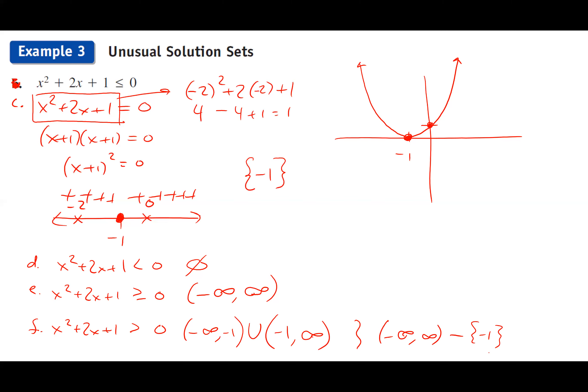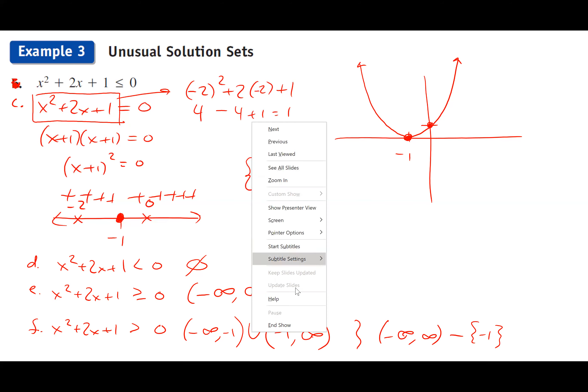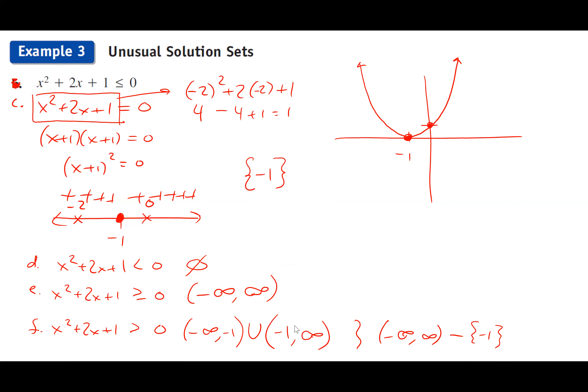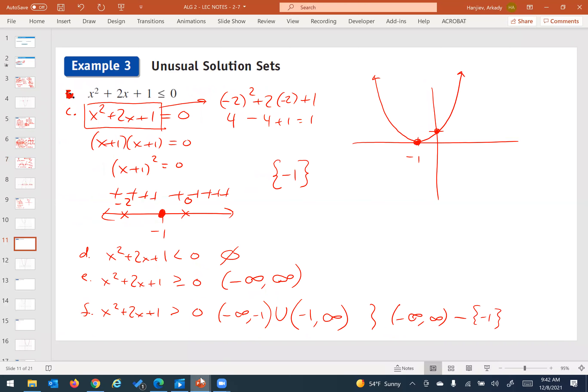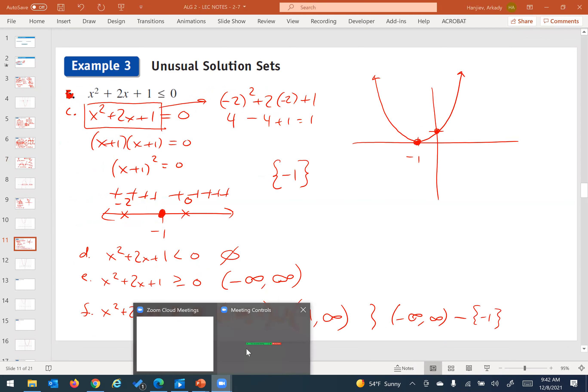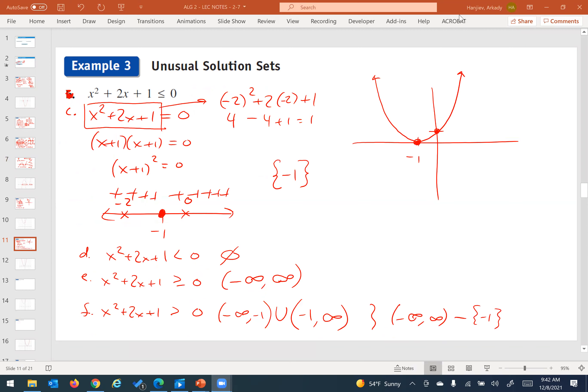We did not finish 2.7 today — we still have the rational inequalities to cover. We'll finish up on Friday. Then review on Monday, and the test is on Wednesday.